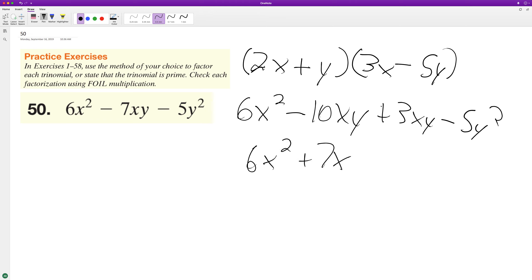So 6x squared minus 7xy and then minus 5y squared. And because that matches up with our original trinomial, that means that the factorization here is correct. Okay, I hope this video helped you out. Thanks for watching, have a great day!